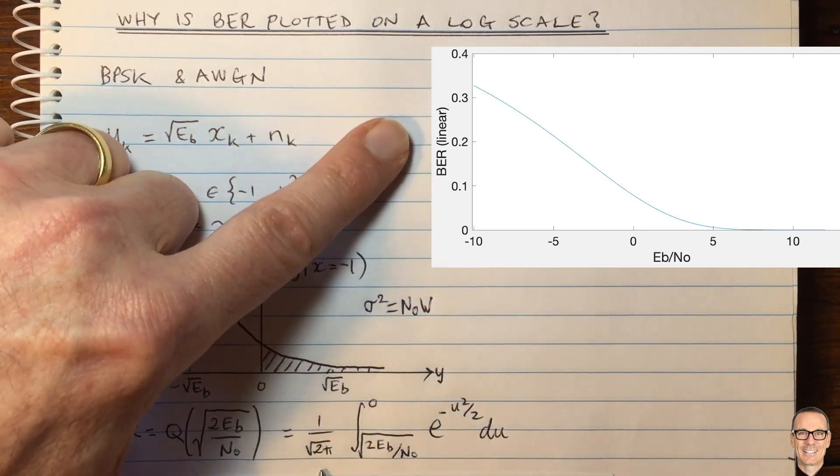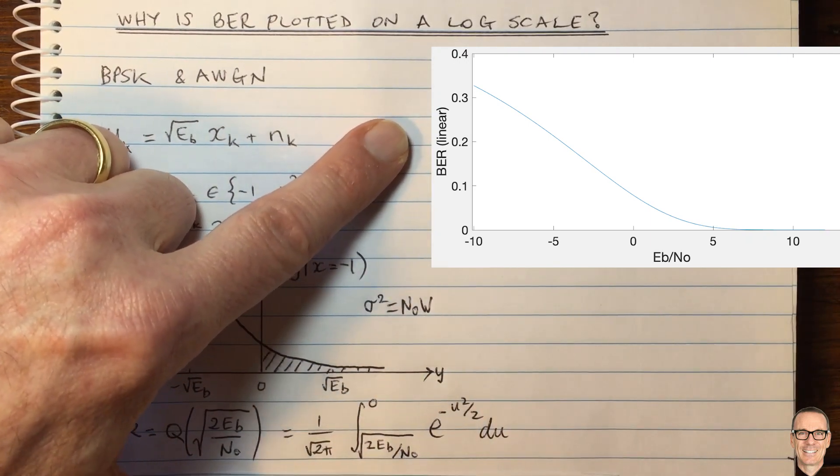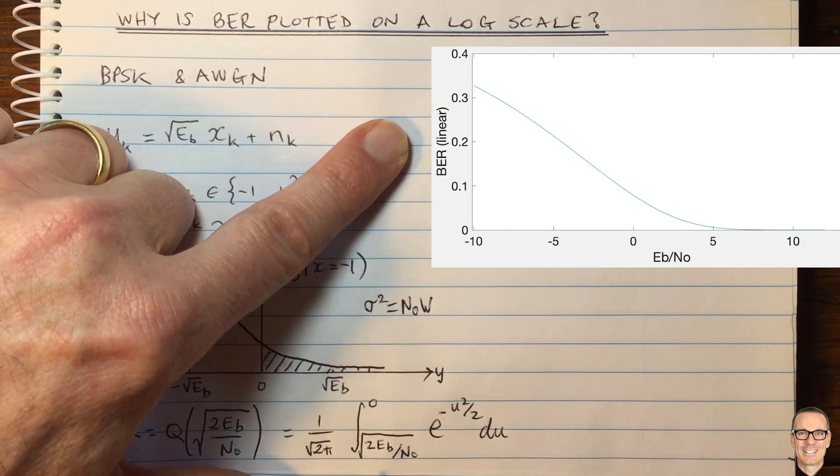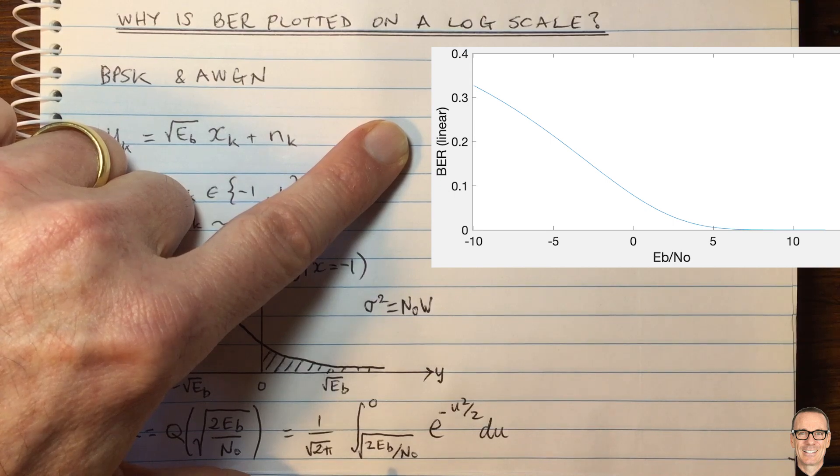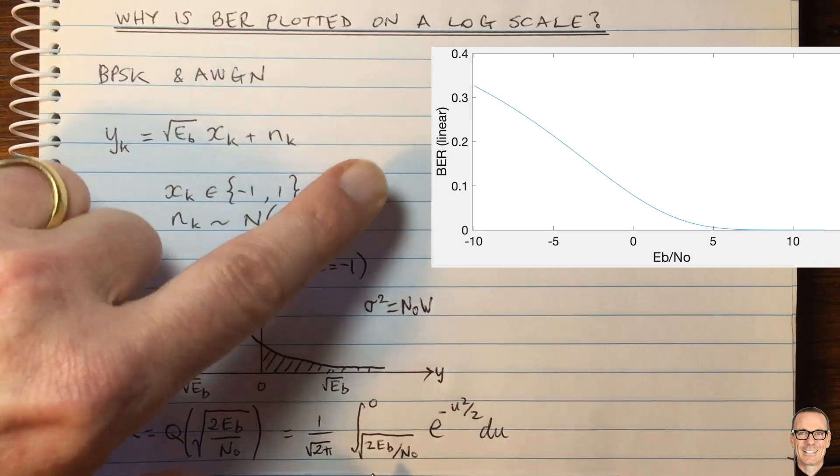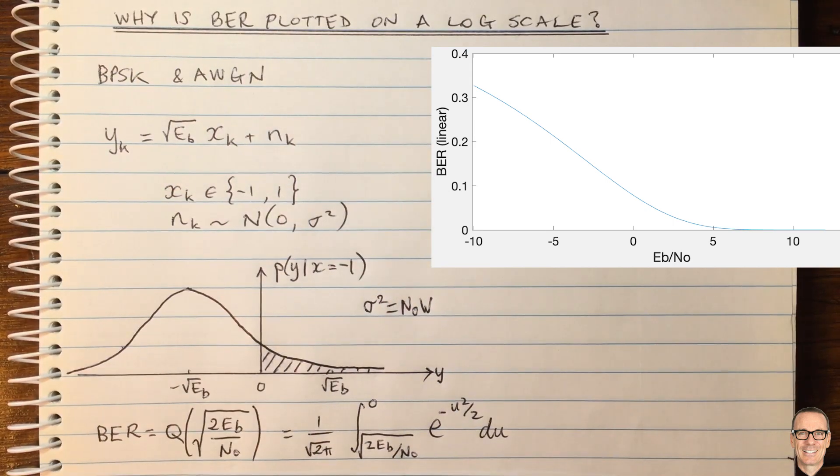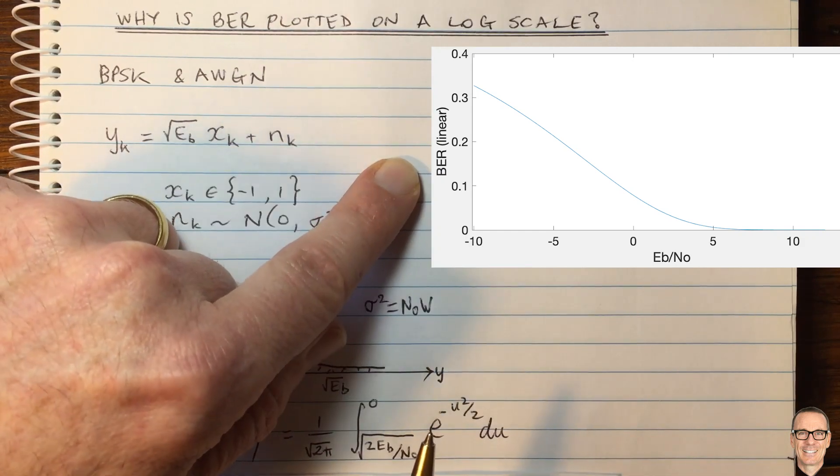So why aren't we satisfied with this linear plot? Well, let's think about what we're seeing here. It's only showing us across the range of bit error rates of things which are in the order of one error in 10 or two errors in 10 or three errors in 10. 0.1, 0.2, 0.3, and so on.